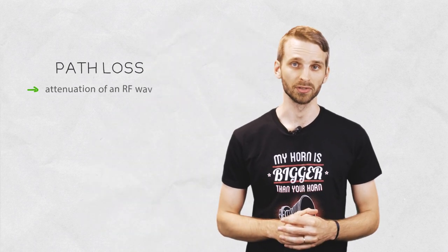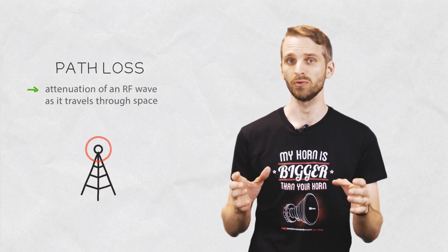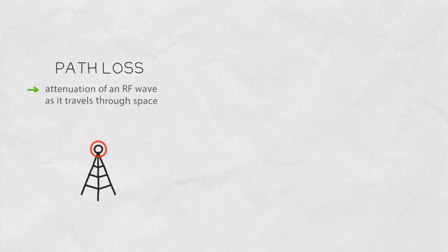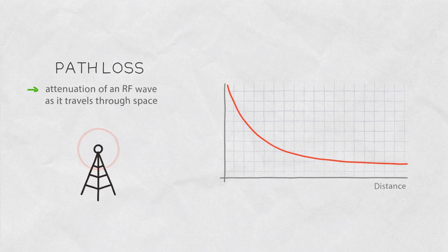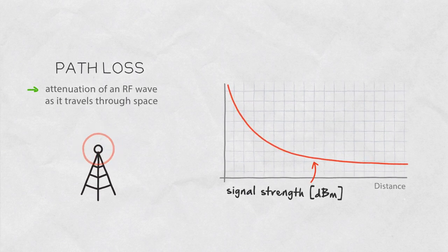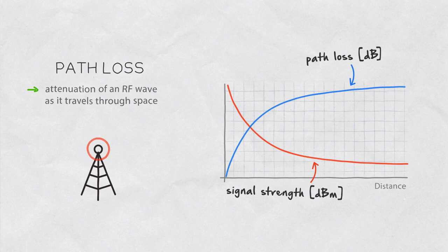Path loss is an attenuation of an RF wave as it travels away from the transmitter antenna. It is a measure of dilution of the wave's energy as it expands into space. While the signal strength is decreasing with distance, path loss is growing and corresponds to the inverse of the signal strength.